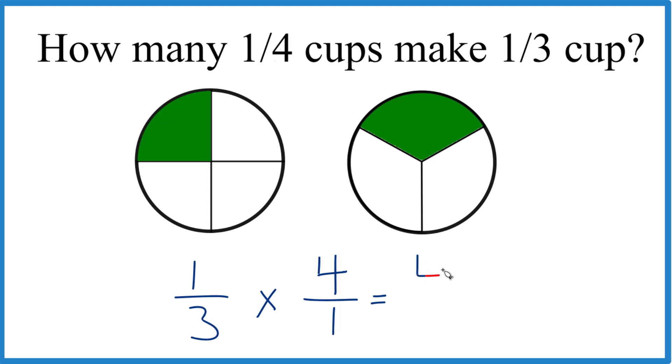Now it's a little bit easier, because we're going to take one times four, that equals four, and then three times one equals three. So we end up with four-thirds.